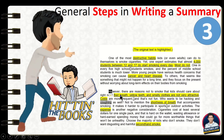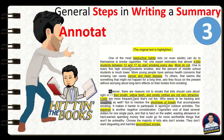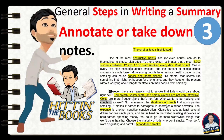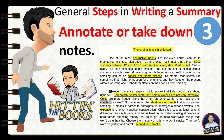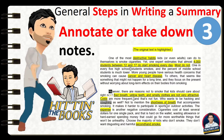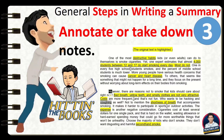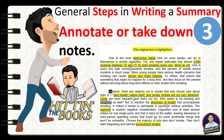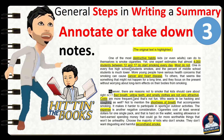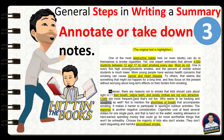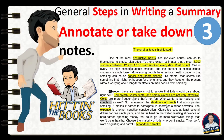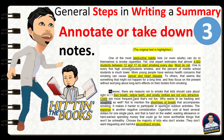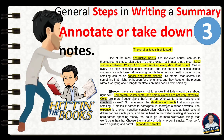Step 3: Annotate or take down notes. You can annotate by highlighting some keywords or important pieces of information from the text. By doing so, it is easier for you to find those pieces of information when you write your summary.